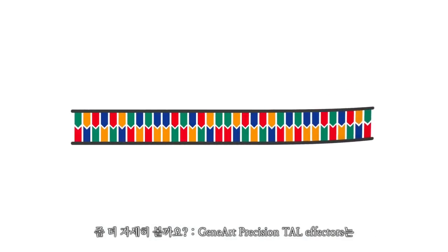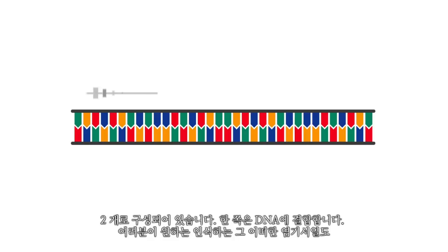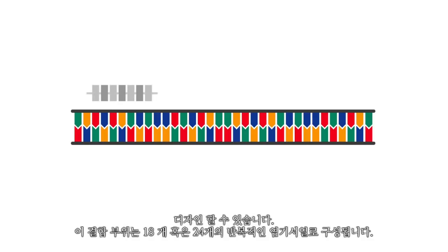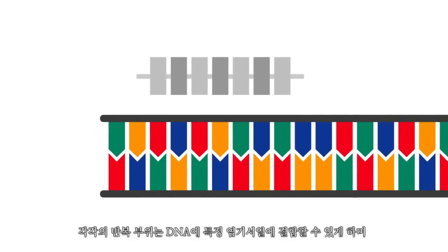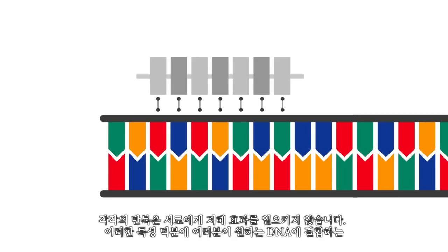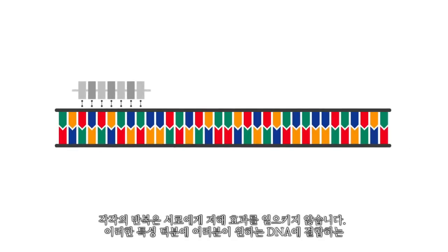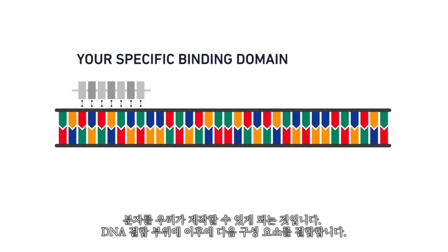The GeneArt Precision Talifectors are made up of two parts. One part binds the DNA, and you can design that to recognize just about any sequence you want. This binding part consists of 18 or 24 repeat modules. Each repeat is responsible for binding a specific base in the DNA, and the repeats are not thought to interfere with each other. That allows us to engineer these molecules to bind any stretch of DNA that you desire.